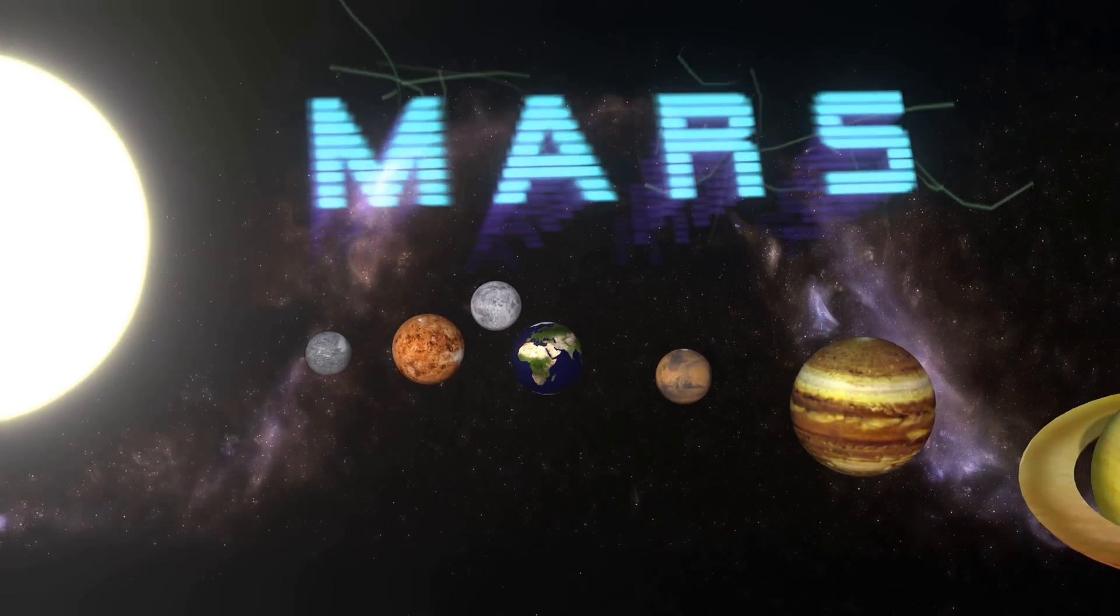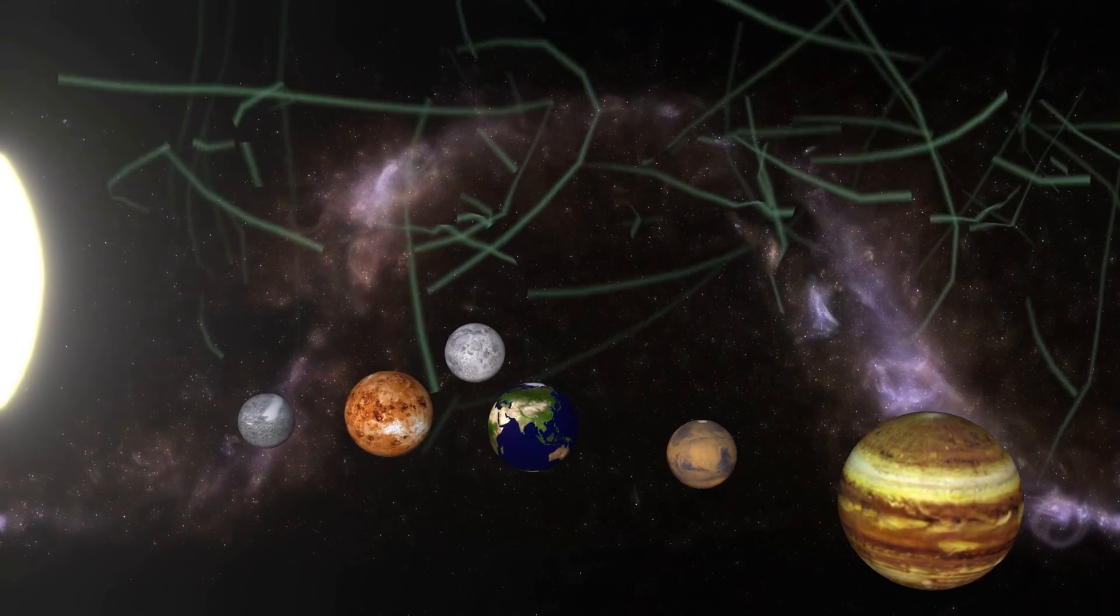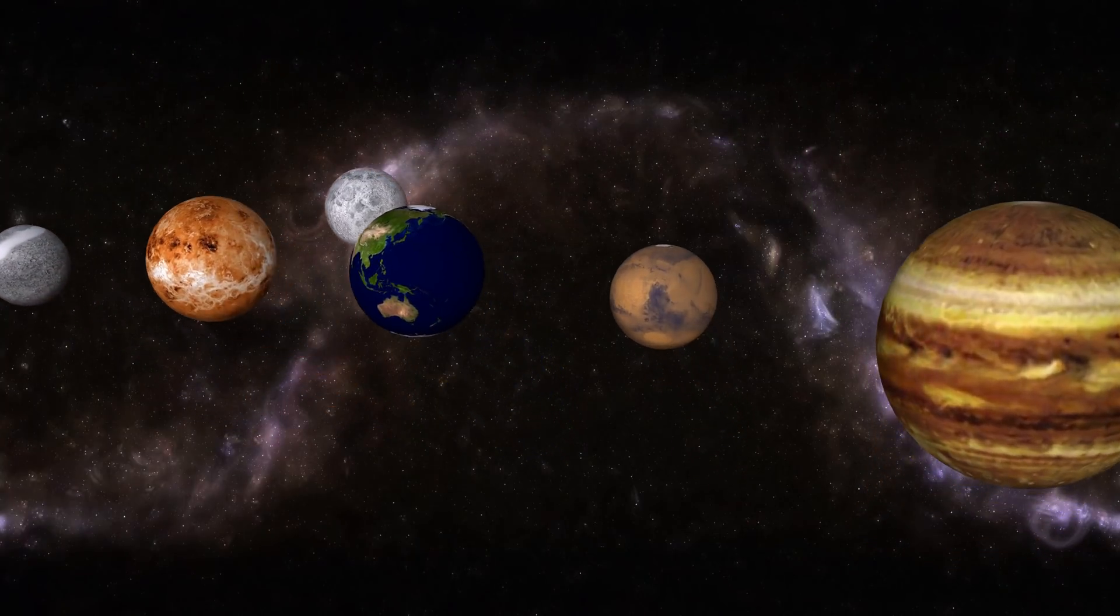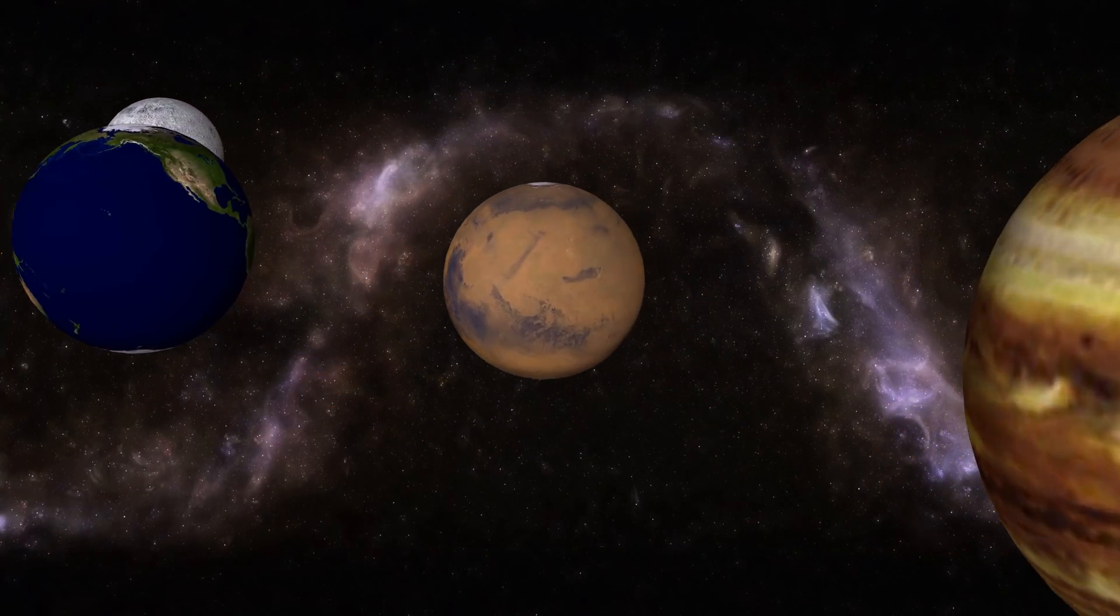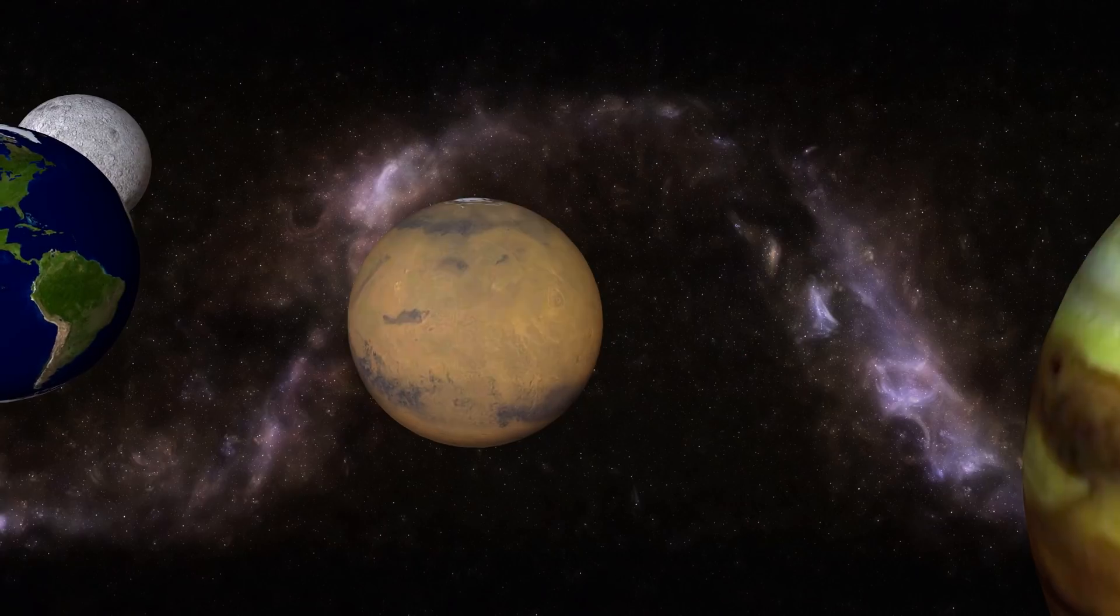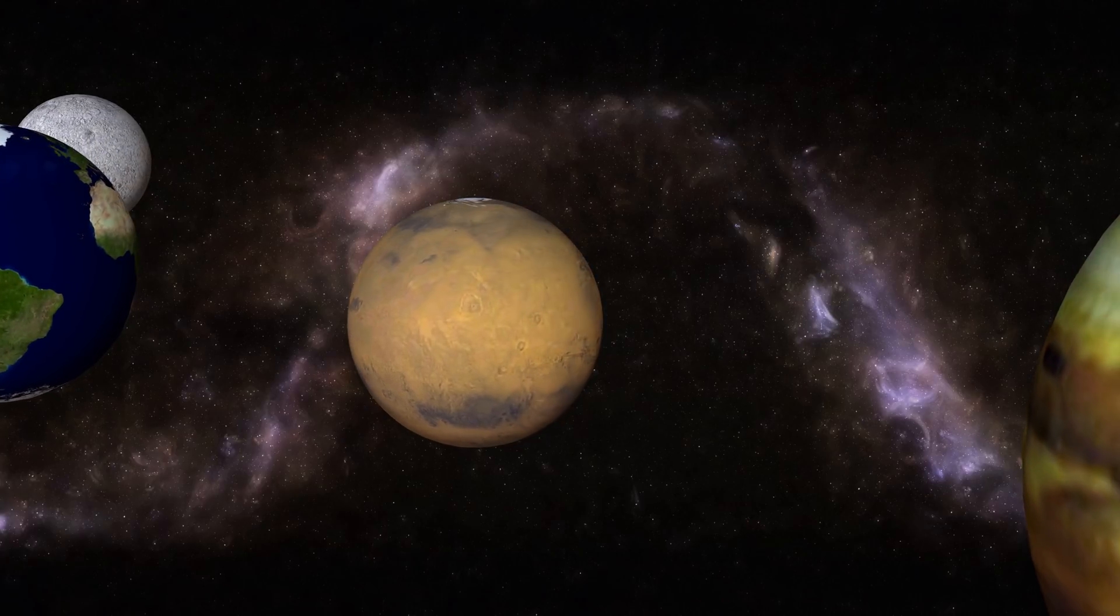Mars is often referred to as the red planet because the reddish iron oxide prevalent on its surface gives it a reddish appearance that is distinctive among the astronomical bodies visible to the naked eye.